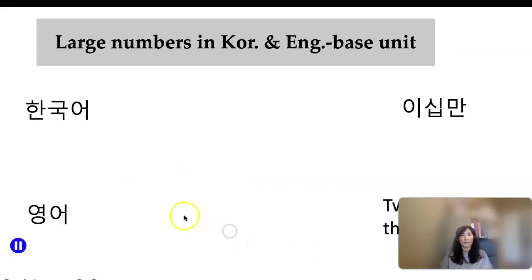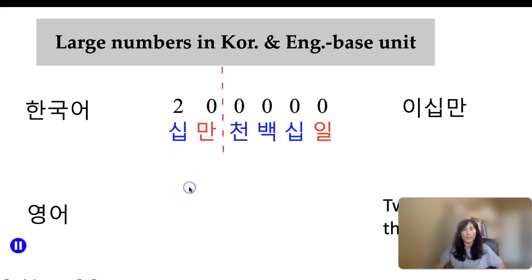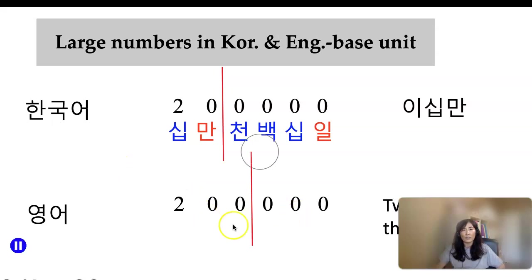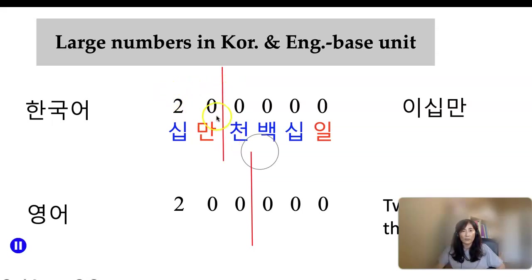How do we read large numbers? Let's compare Korean and English. In English, the basic unit is a thousand — for example, two hundred thousand. But Korean is different: the basic unit is not a thousand, it's ten thousand. So you split the number there. 20 is 이십, and the ten-thousand unit is 만, so two hundred thousand in Korean is 이십만.